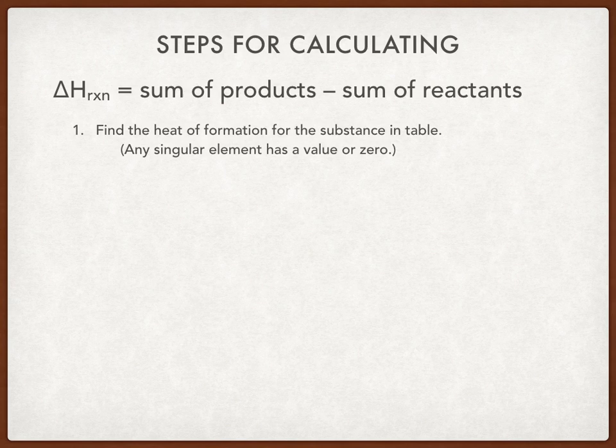Here are the steps we're going to follow. First, find the heat of formation for each substance in the table — these tables will be given to you. One important thing: anything that is a singular element, in other words the element is all by itself, is going to have a value of zero and will not appear in the table.